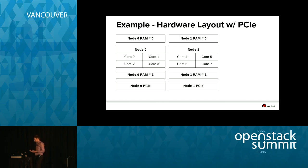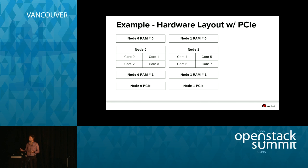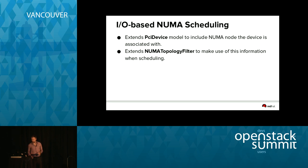Moving on to the PCIe NUMA locality example. Most modern x86 chipsets have PCIe lanes associated with a given NUMA node. It's the same principle as with memory: if I'm on core 0 using a physically passed-through device attached to node 1, I won't get the same performance as if it were attached to node 0. Extensions to the NUMA topology filter allow it to make use of this information where available; for chipsets that don't expose it, it will make no difference.